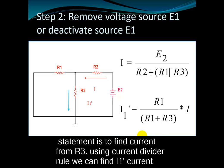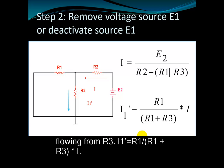The problem statement is to find the current through R3. Using the current divider rule, we can find I1', the current flowing through R3. So I1' is equal to R1 divided by R1 plus R3, multiplied by I.